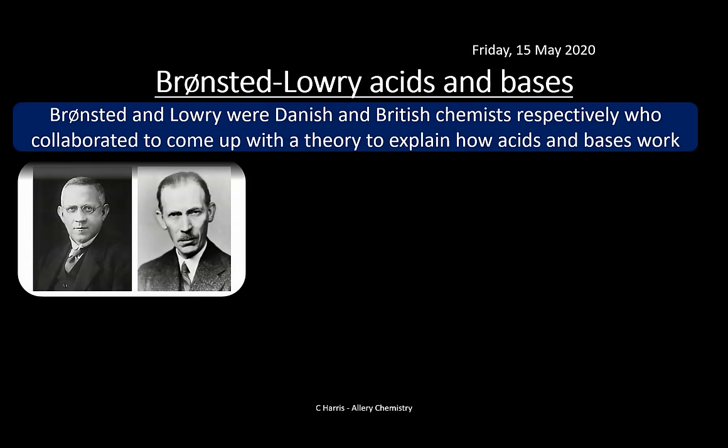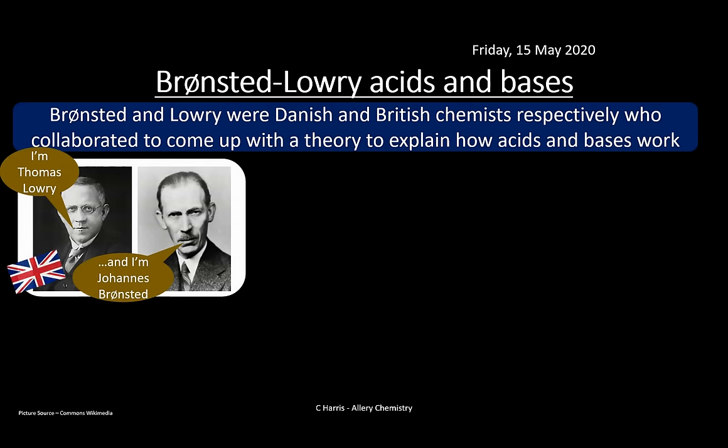Bronsted and Lowry were Danish and British chemists respectively, and they collaborated to come up with a theory to explain how acids and bases work. Thomas Lowry is on the left and Johannes Bronsted is on the right. These two both came up with this theory, and it's the theory we use most of the time when describing acids and bases - it's a very popular and common theory.